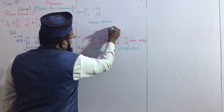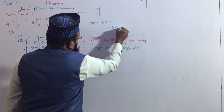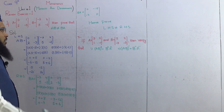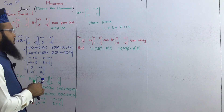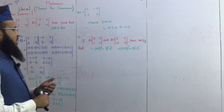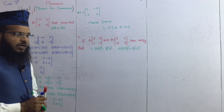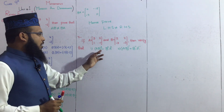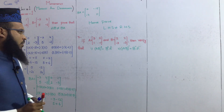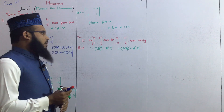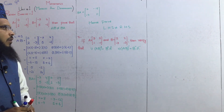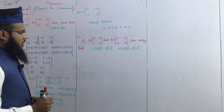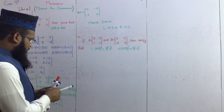Ab isi review exercise unit number one ka last wala question jo hai wo solve karayenge. Question number 7 hamare paas given hai: if A matrix, B matrix, then verify — (AB) ka transpose is equal to B transpose aur A transpose. Second part: (AB) ka inverse is equal to B inverse times A inverse. Pahle hum iska first part jo hai wo solve karte hain.